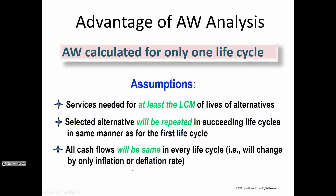The selected alternative will be repeated and the cash flows will be the same. When we did the LCM manually, one tricky assumption is that you can buy the item again for the same price in the future — maybe valid for computers around $500, but not necessarily for a backhoe costing $78,000 today. In annual worth analysis, you can't correct for that because repeating the cash flows is built into the assumption.